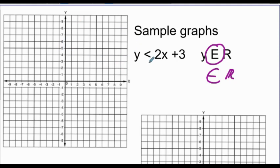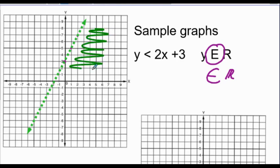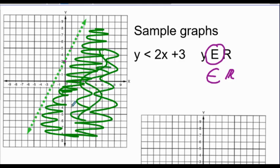So here we'll graph Y less than 2X plus 3, and we're going to make this real numbers. We start at the 3, and go up 2 over 1 repeatedly to graph the function. I see that it's a less than symbol, so I use a dashed line. And based on what we did previously, we know that we want to shade under the line — any value down here works for X and Y.